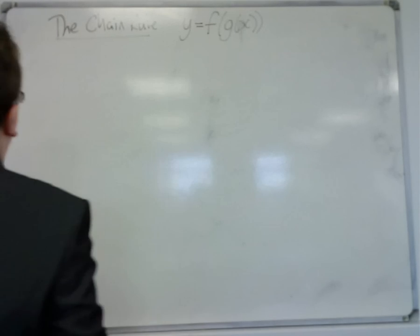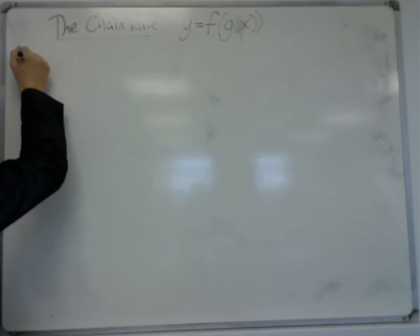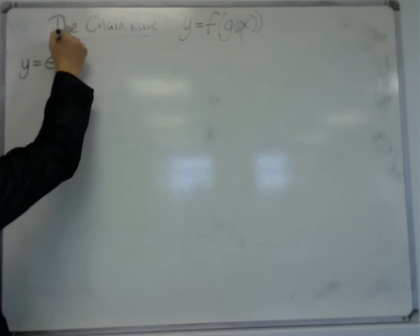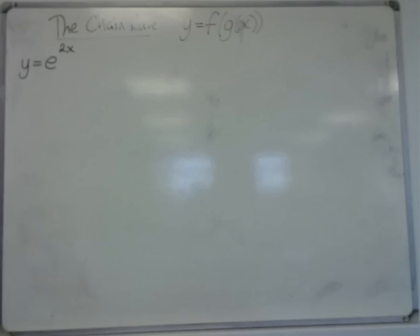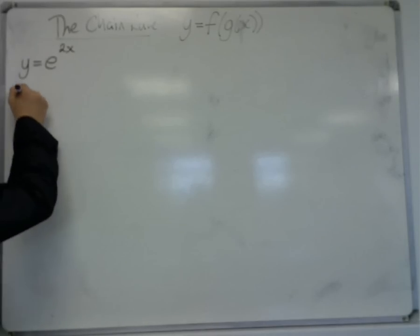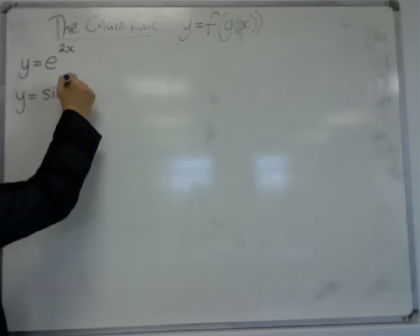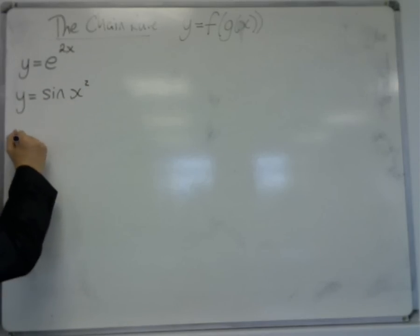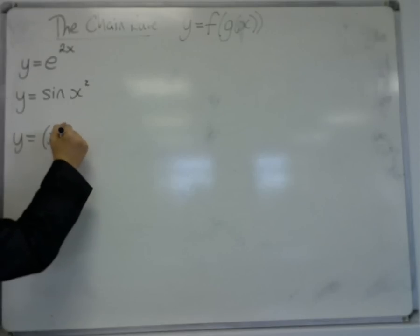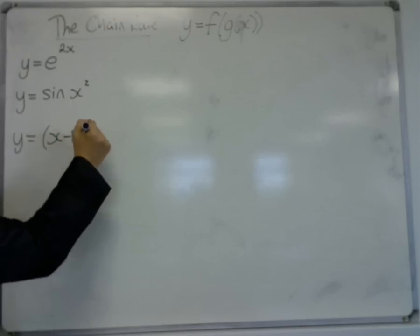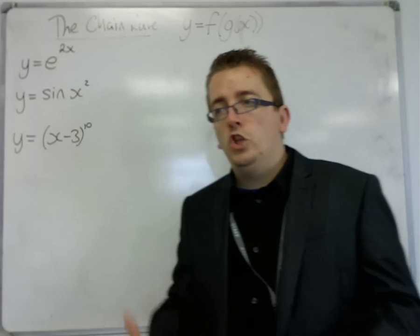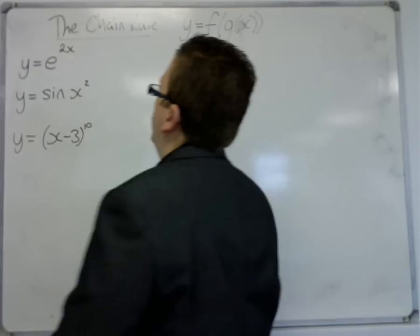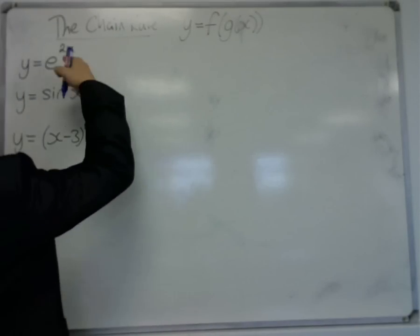Examples of this would be something like y equals e to the 2x, or y equals sine of x squared, or y equals (x minus 3) to the 10. All of these use the chain rule in order to differentiate because ultimately, they are functions within functions.